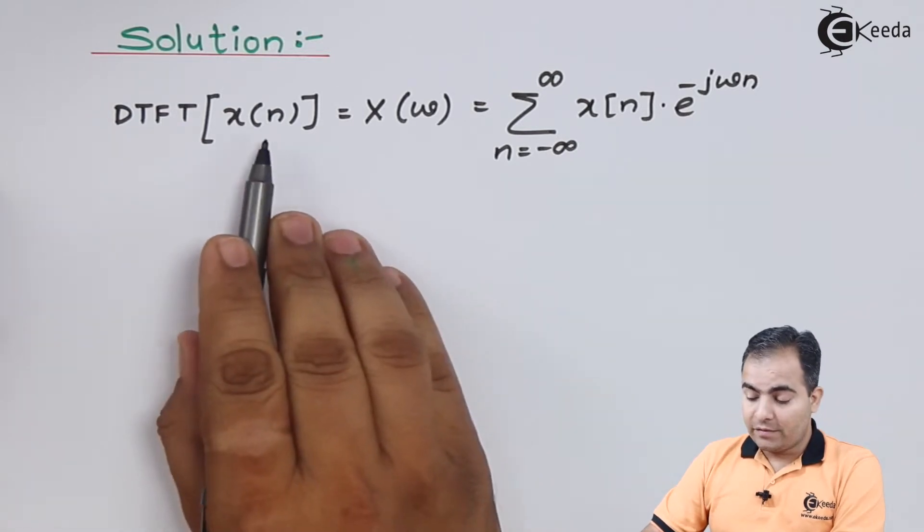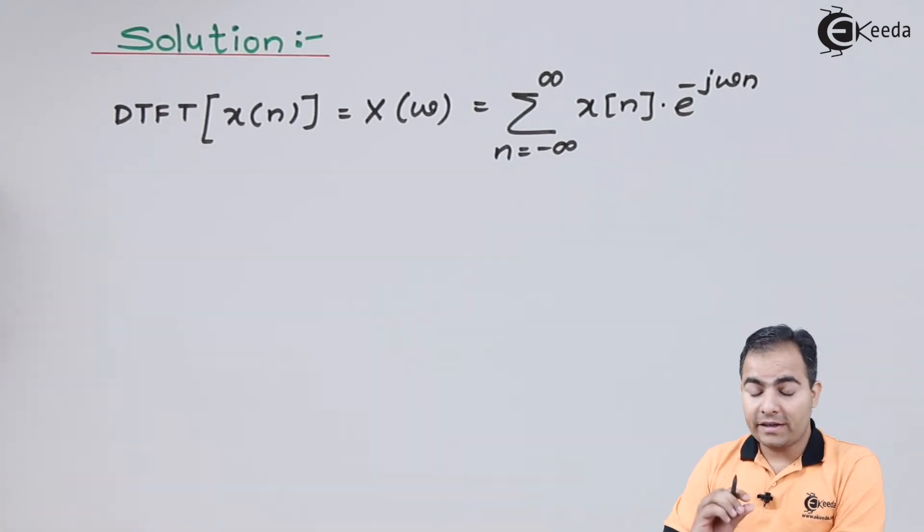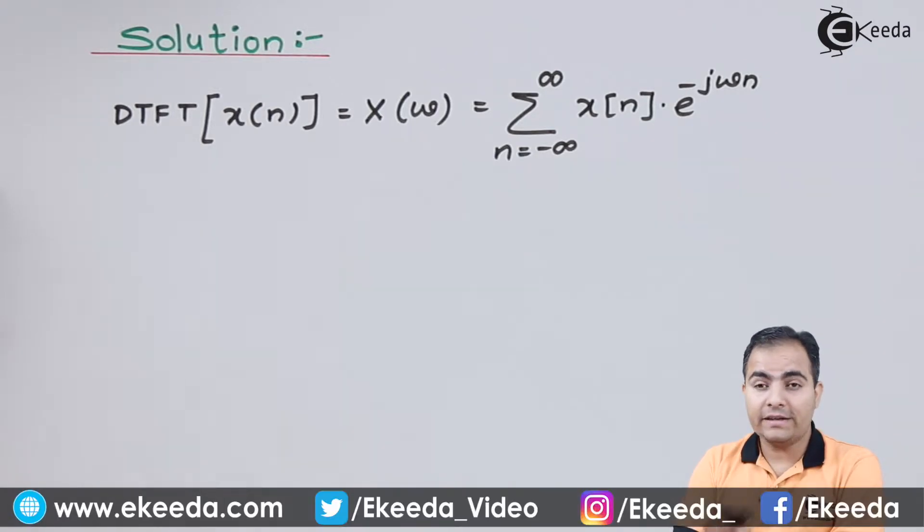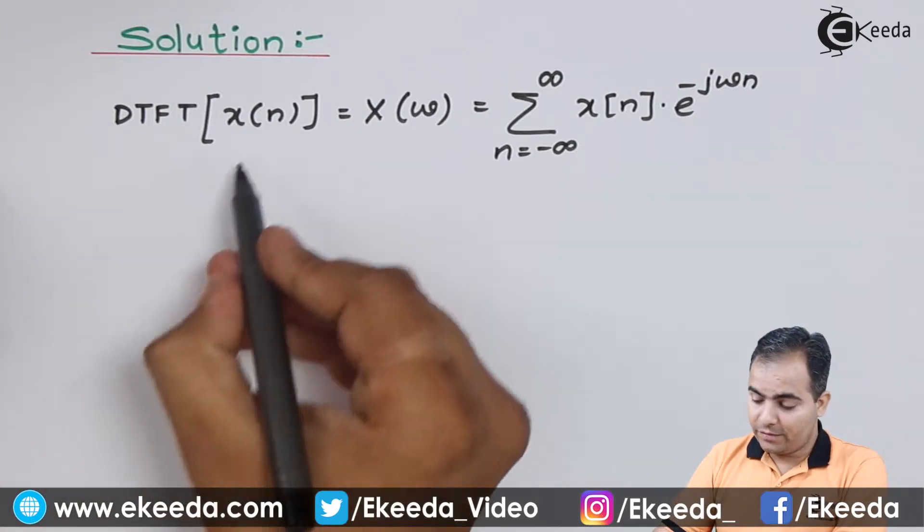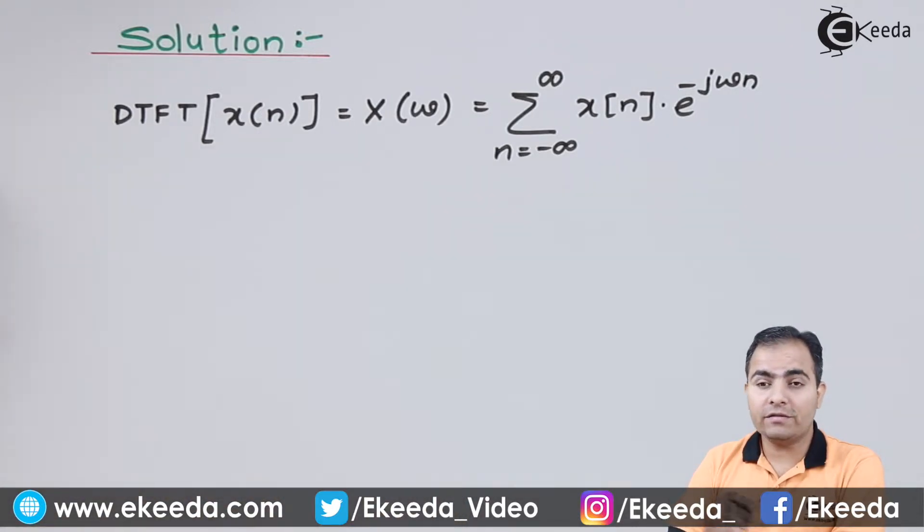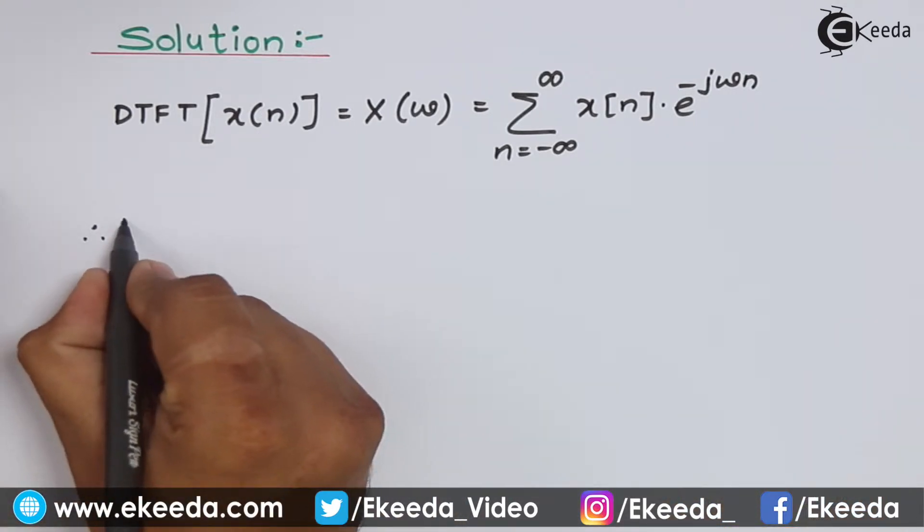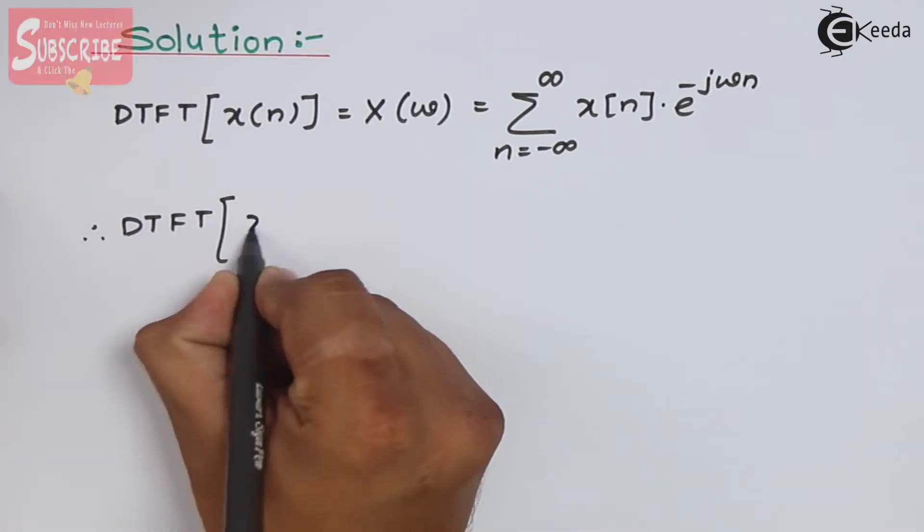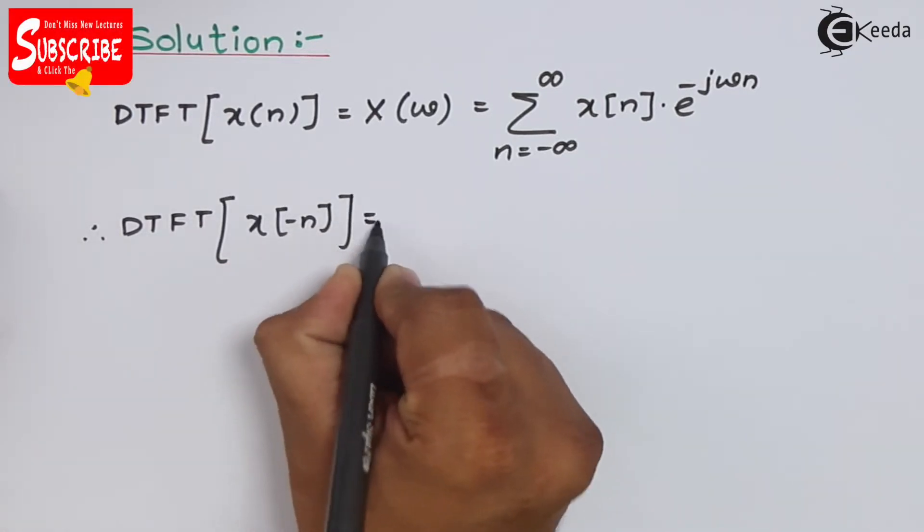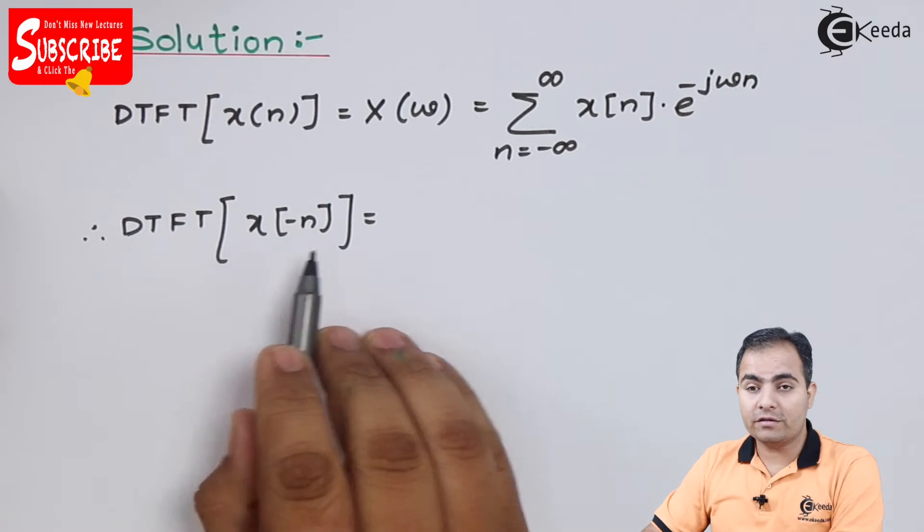Now we want to calculate the time reversal property, means I want to check the mirror image effect in DTFT. So we will replace this x of n by x of minus n. So my input is changed to x of minus n.